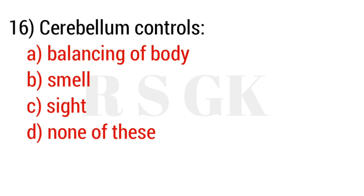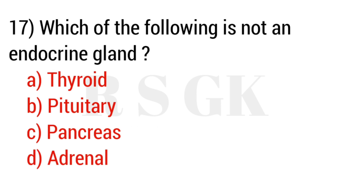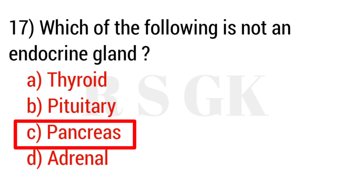Question number sixteen: Cerebrum controls — the answer is Option A: cleansing of body. Question number seventeen: Which of the following is not an endocrine gland? The answer is Option C: pancreas.